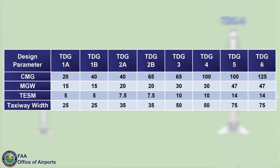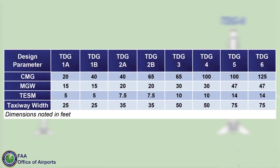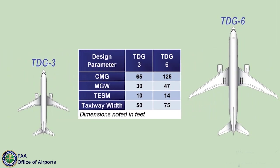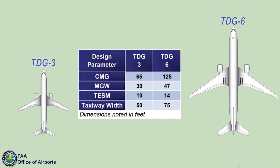The TDG defines specific design parameters for taxiway design. For example, the TDG-3 and TDG-6 design parameters shown here are used for specific taxiway design elements for each TDG group, as described in this video.